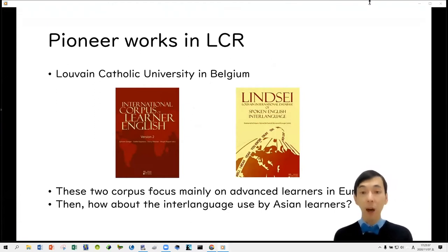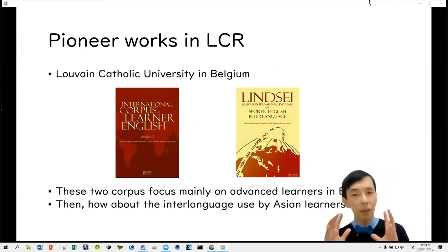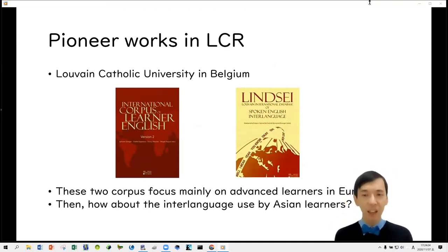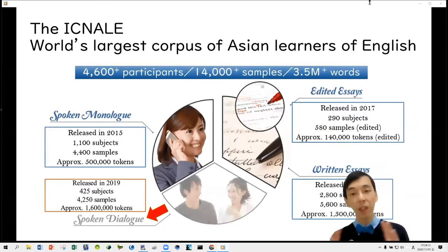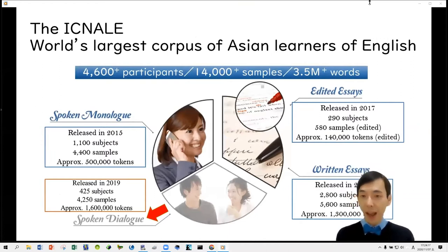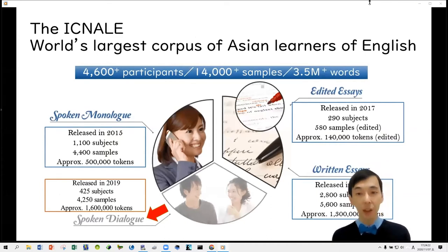However, they focused on learners in Europe, so one question comes up: how about the situation surrounding learners in Asia? That's why the authors compiled the corpus called ICNOW, which stands for the International Corpus Network of Asian Learners of English. It is one of the world's largest learner corpora focusing on Asian learners.